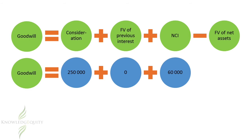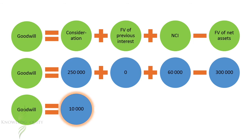As Alpha Limited uses the full goodwill method, the amount of NCI will equal the fair value of shares held by the non-controlling interest shareholders, which is $60,000. The fair value of the identifiable net assets is equal to $300,000. Therefore, goodwill will be $10,000.